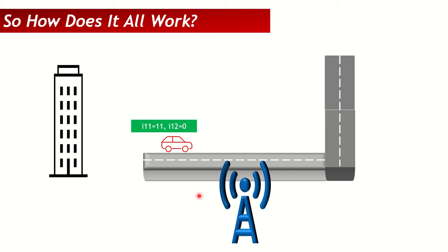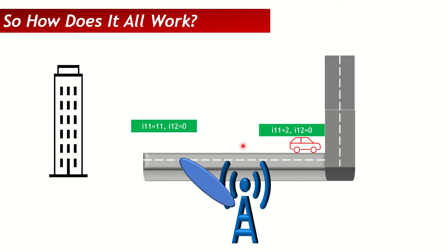Let's see this in a real-life example. A car near the massive MIMO unit sends i11=11, i12=0, and the gNodeB allocates the corresponding beam. When the car moves horizontally to a new position, it sends updated CSI feedback — say i11=2, i12=0 — and the gNodeB allocates a new beam reflecting the changed horizontal position. Since only the x-axis changed, i12 remains 0.